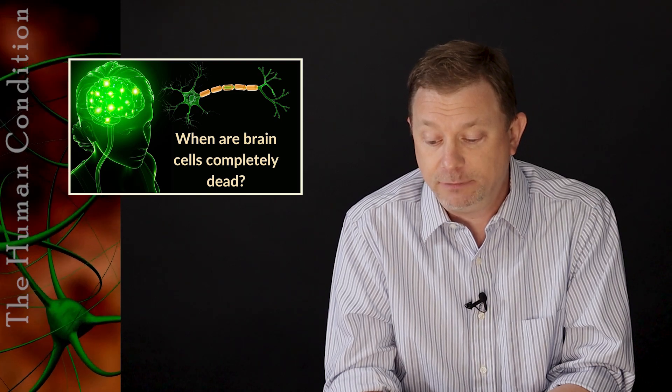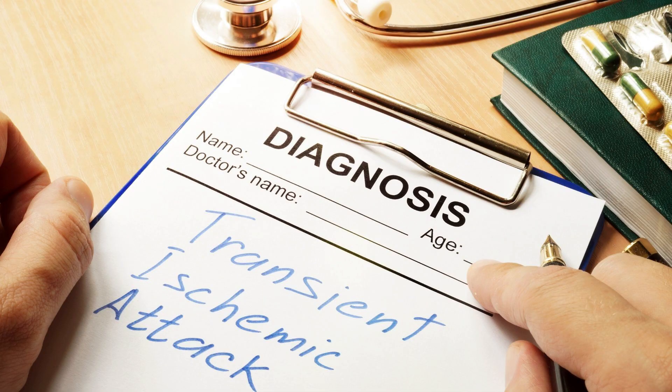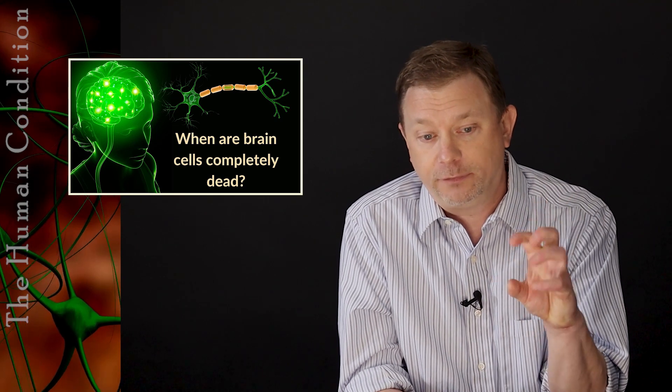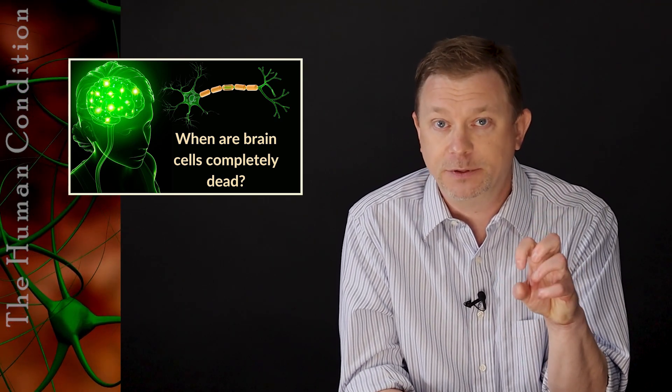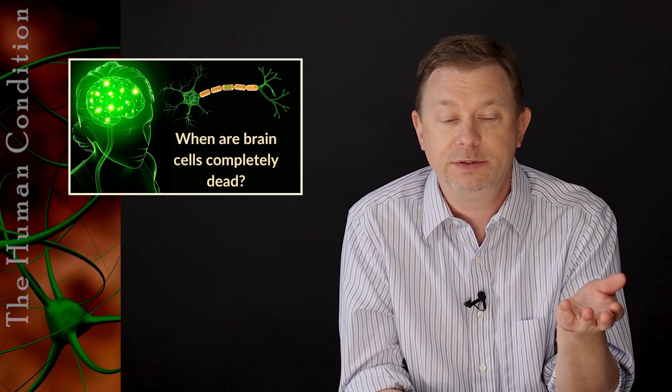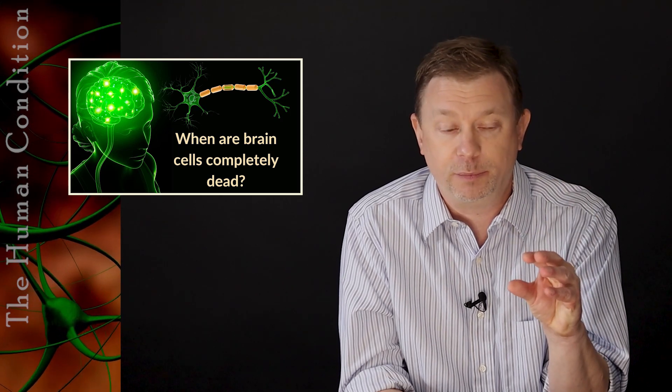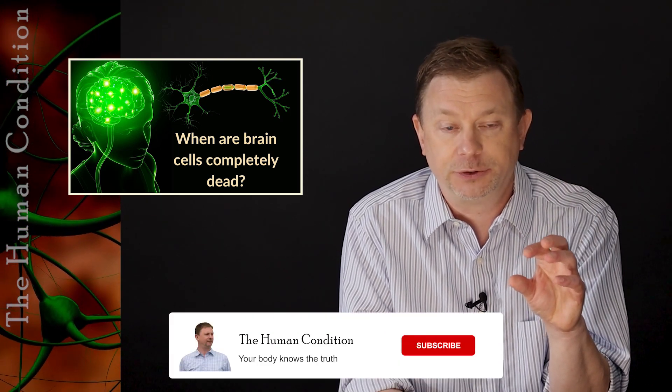Sometimes a person can have transient ischemic attacks where no cells actually die, but they kind of wink on and off from loss of metabolism. They lose metabolism for whatever reason, and they just stop firing for a period. And these events are short periods of time.